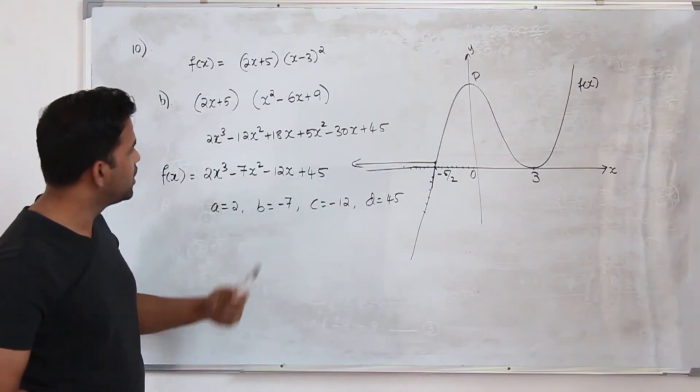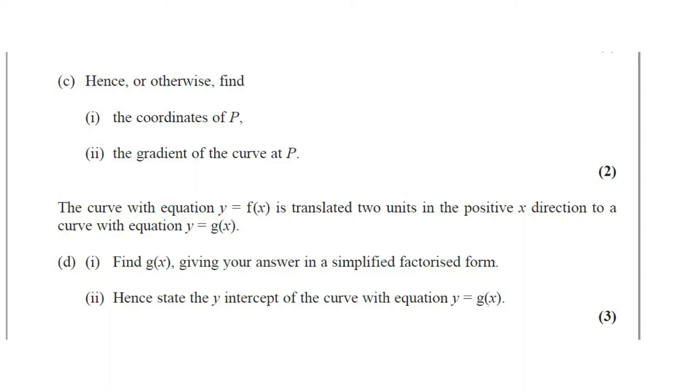Just expand the bracket and you got the solution. Part C: Hence or otherwise find the coordinates of p and number 2, the gradient of the curve at p. The question carries 2 marks.